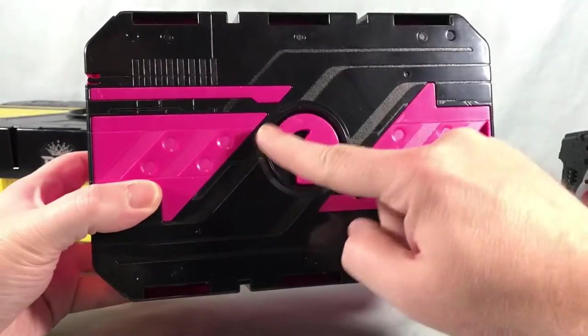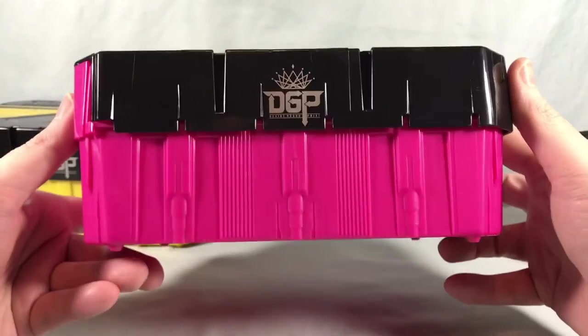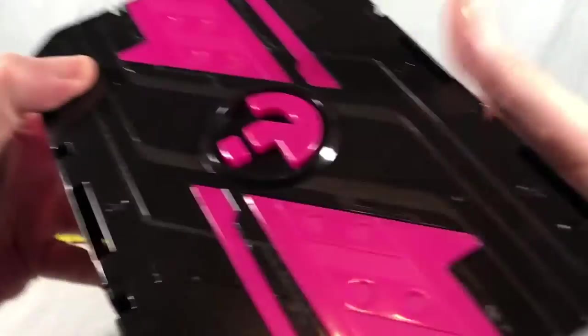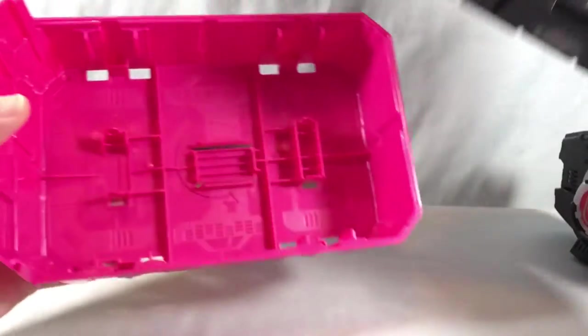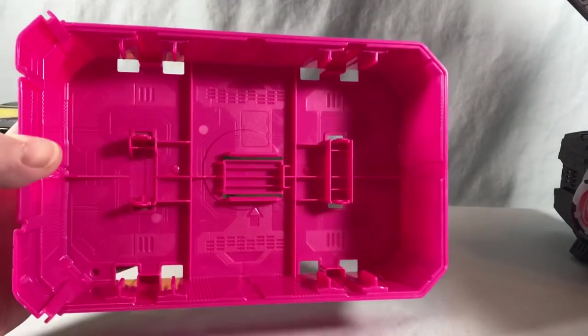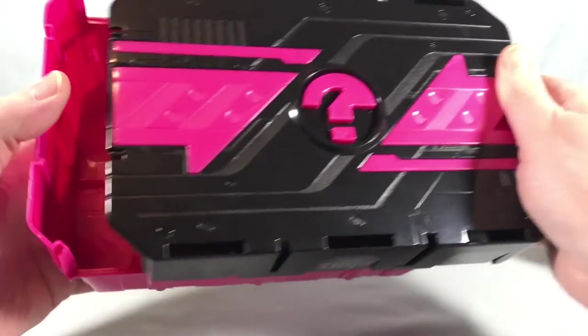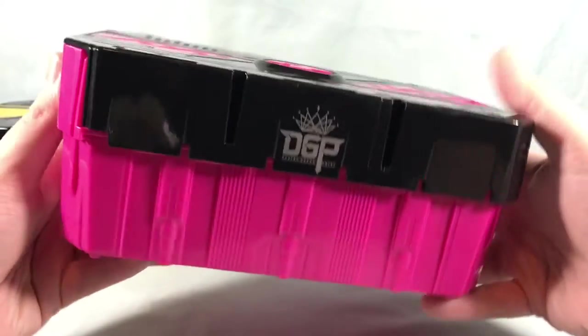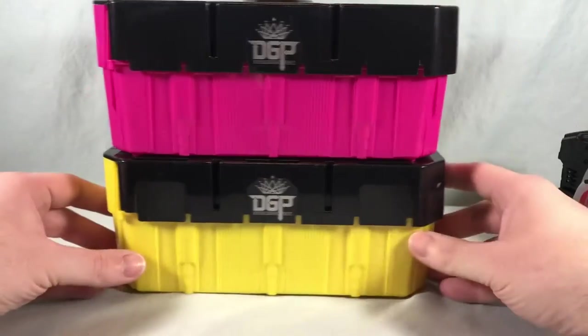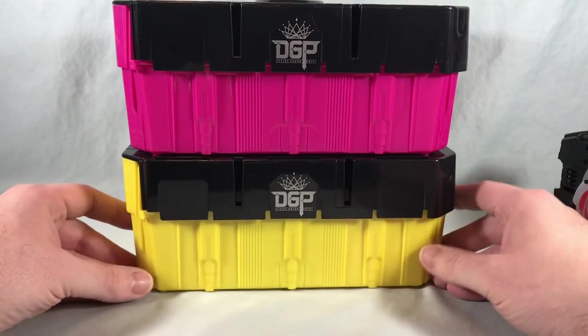I'll give you a quick look at this one. Again, it's exactly the same - now you have the question mark. Got the Desire Grand Prix stamp there on the front. This opens exactly the same way and has the exact same connection points. That's pretty much it for these. Let's go ahead and move on to the Double Driver Raise Buckle.